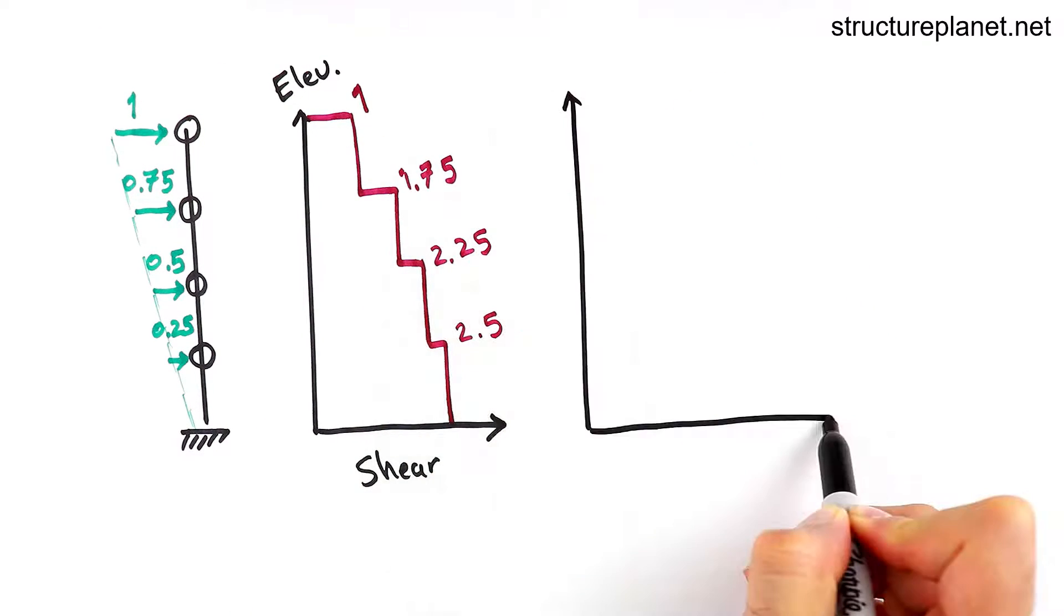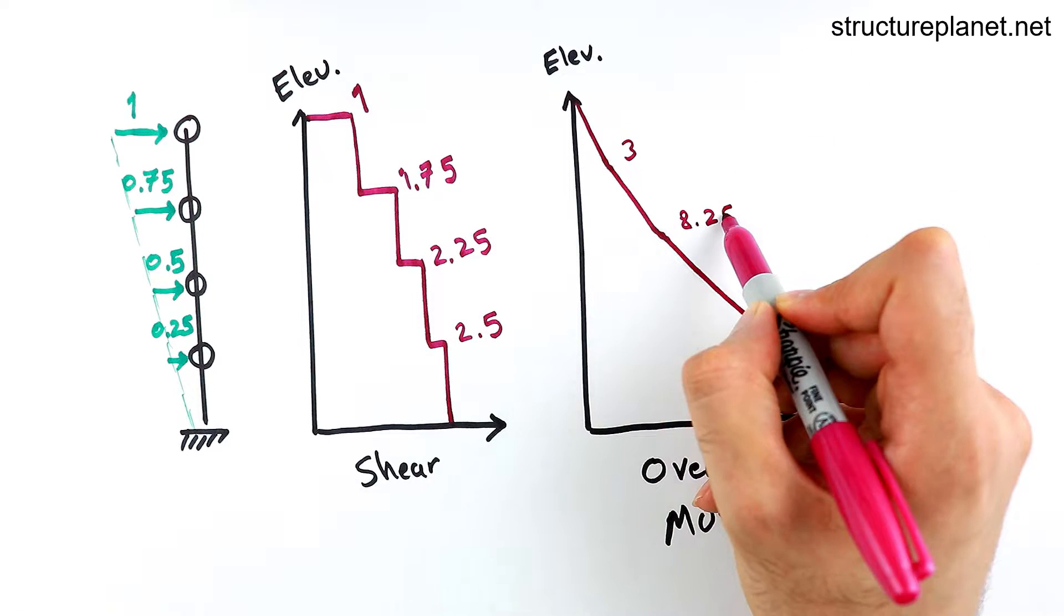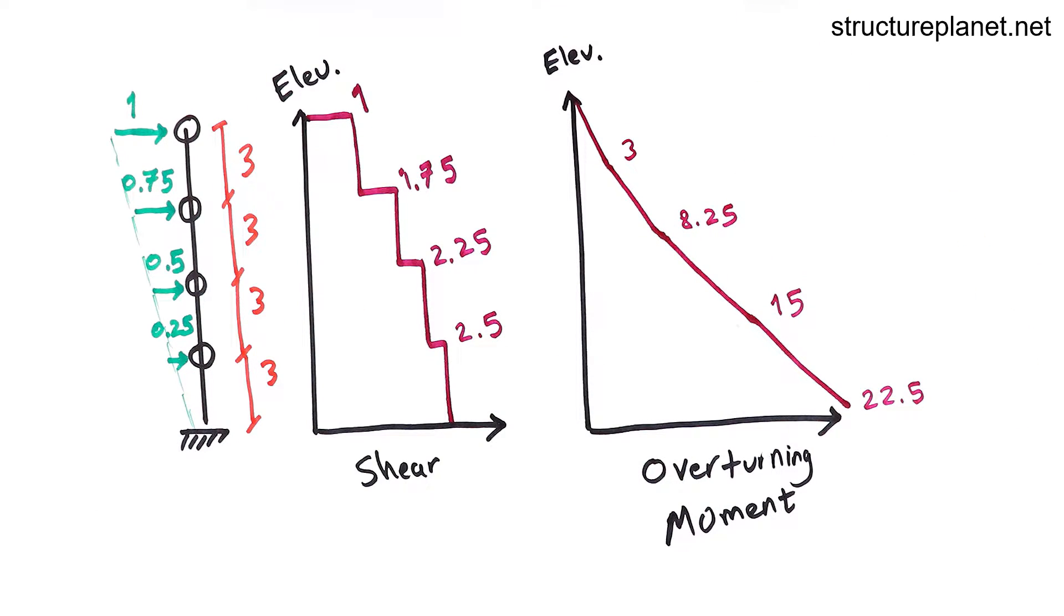So the lower we go the more shears and moments we would expect in the lateral elements and this is the main reason for larger bracings at the lower levels and when combined with the axial forces from the gravity loads, the thicker shear walls as well.